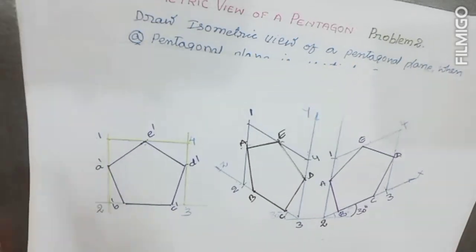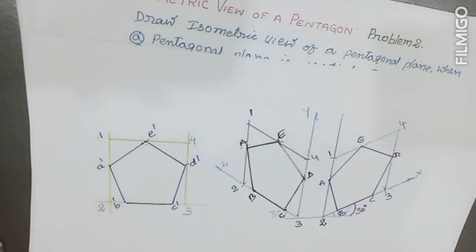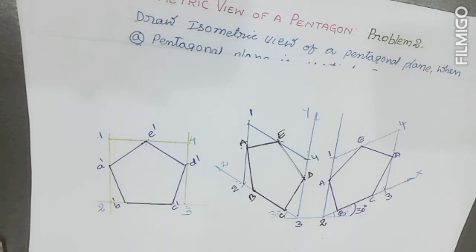Now we will construct the pentagon when the plane is horizontal. When the plane is horizontal, all sides are parallel to the horizontal plane, so all sides need to make an angle of 30 degrees to the XY line. Since there is no direct way to construct the pentagon, we first draw the rectangle in isometric view when it is parallel to the horizontal plane — meaning all four sides of the rectangle make an angle of 30 degrees to the ground line.